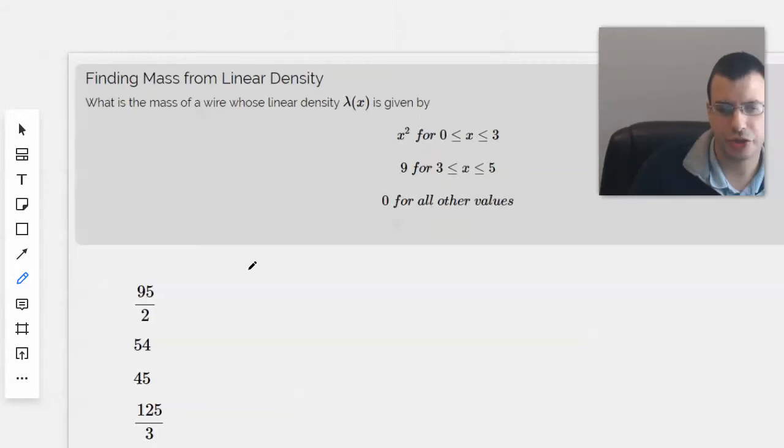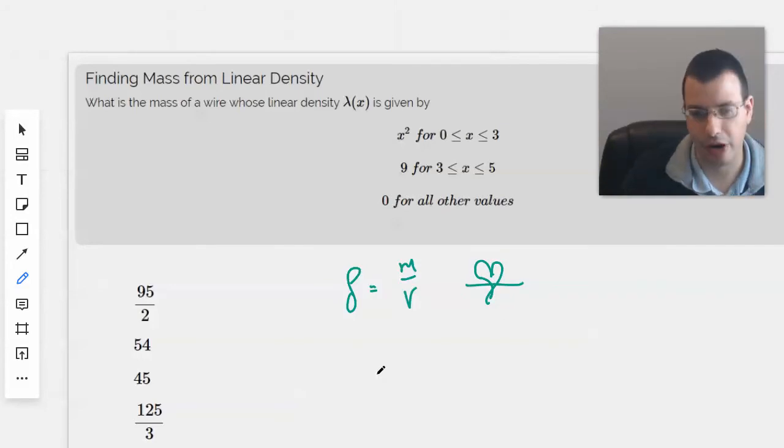The general equation for density, normally ρ, is mass per unit volume. For linear density, the way I remember this is mass equals love. You draw a heart, put a line through it, you have an m on top and a v on bottom. That's the mnemonic.